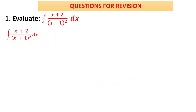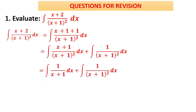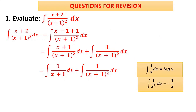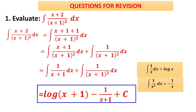Question 1: ∫(x + 2)/(x + 1)² dx. We simplify the numerator: write x + 2 as (x + 1) + 1, then split into two integrals — (x+1)/(x+1)² plus 1/(x+1)². The first term becomes 1/(x+1) and the second becomes 1/(x+1)². Applying formulas: 1/x → log x and 1/x² → −1/x. Here the coefficient of x is 1 in both cases, so no division needed.